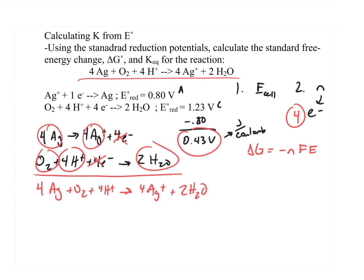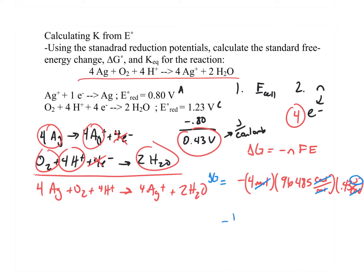Setting up the calculation: four moles of electrons times 96,485 coulombs per mole times 0.43 joules per coulomb gives a very large number — negative 165,954 joules. Converting to kilojoules, that's approximately negative 166 kilojoules of energy. That is the delta G for this voltaic cell.